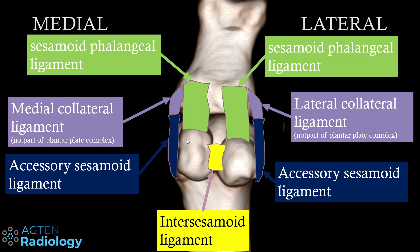Moving on to probably the most important structure: the sesamoid phalangeal ligaments. You have the sesamoid on the medial side and lateral side, and from the distal pole of both sesamoids there is one ligament — or rather an enforcement or focal thickening of the plantar plate — running from the distal pole down to the plantar base of the proximal phalanx. That's the sesamoid phalangeal ligament, and you've got one on each side.